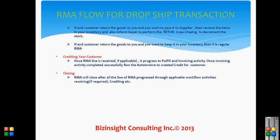The third type of receiving is conditional receiving: if the end customer returns the goods to you and you want to pass them to the supplier, receive the goods in your inventory and also inform your buyer to perform an actual return — not a logical return — in purchasing, to decrement the stock.